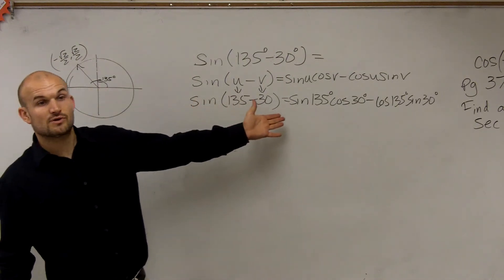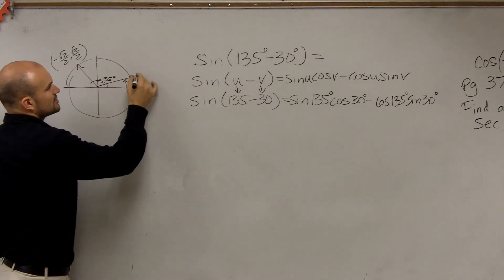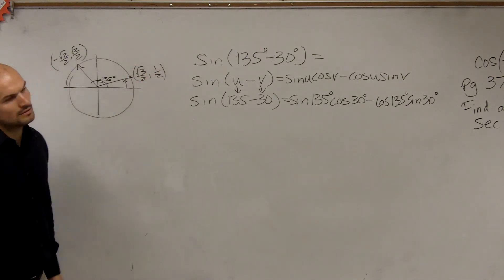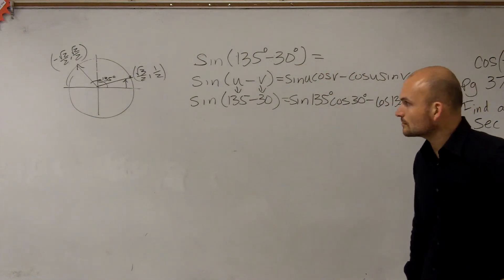Then let's look at the next one, which would be 30 degrees. So 30 degrees is going to be this angle right here, which is square root of 3 over 2 comma 1 half. Does everybody follow so far? OK.